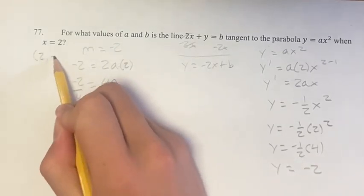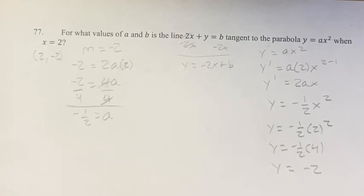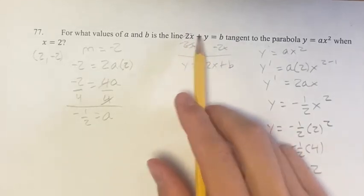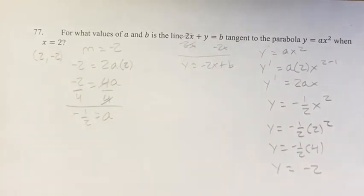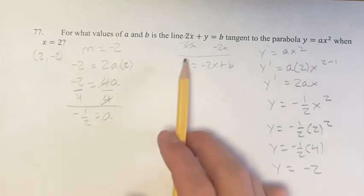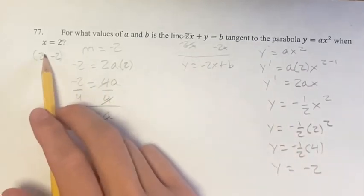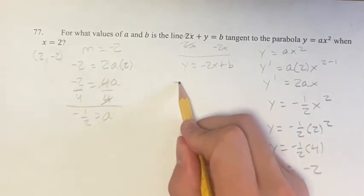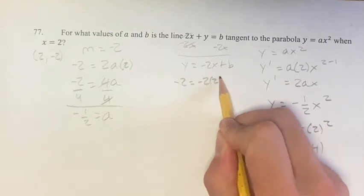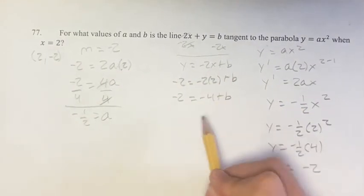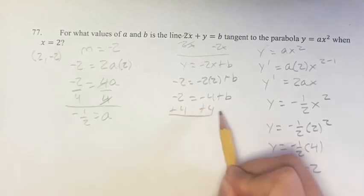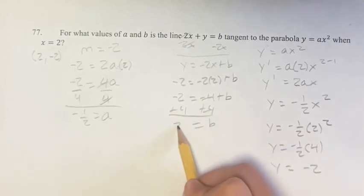The point (2, negative 2) is going to be the point where this line is tangent to this parabola. Therefore, this point is on this line, and if we plug in 2 for x and negative 2 for y and solve for this, adding 4 to both sides, we get that b equals 2.